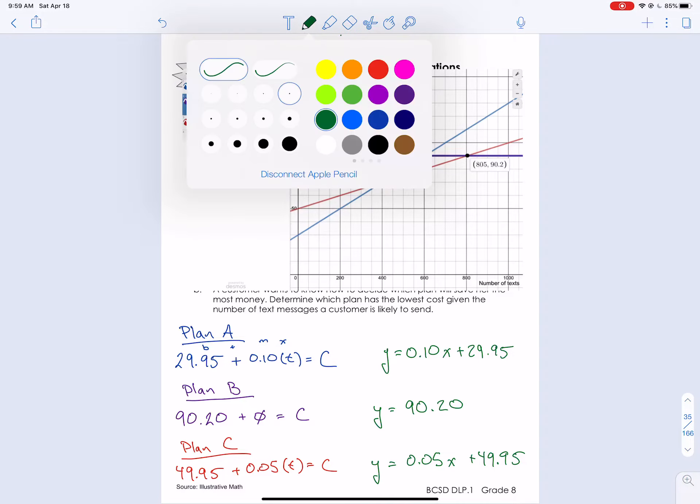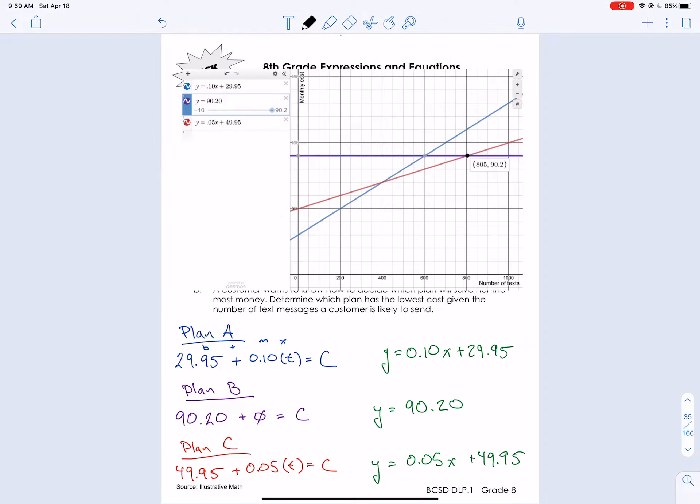Part B, it says, which one would we recommend for our customer based on their usage or their number of text message that they send? So again, looking at our graph, we have the three lines. So just looking at 200 texts. So if I text only 200 messages a month, which plan is going to be the cheapest? So if I choose plan A, that's here. It's going to cost me about $50. If I choose plan C, it's going to cost about $60. And then plan B, that's the unlimited one. It's always going to cost $90.